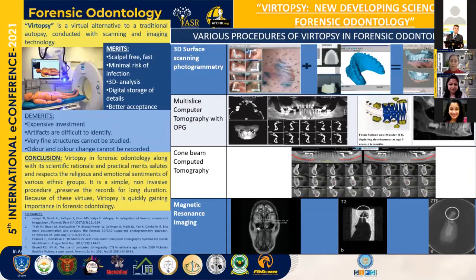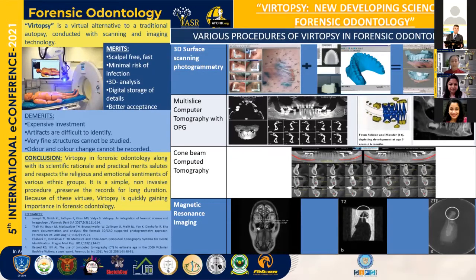In multi-slice computer tomography with OPG, we can easily see the hard tissue in multiple thin sections, and it aids in identifying any changes in the hard tissue. CBCT gives a useful source for ante-mortem and post-mortem records and aids in age estimation, gender determination, as well as personal identification. With the help of MRI, we can examine the soft tissue and see if there are any changes.